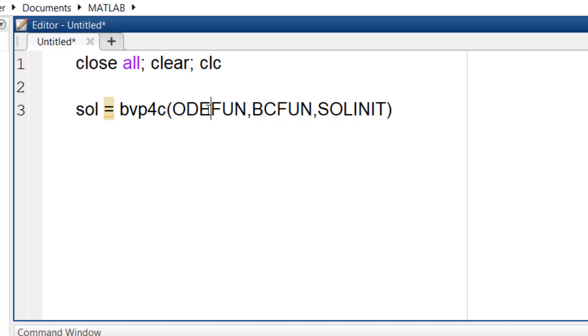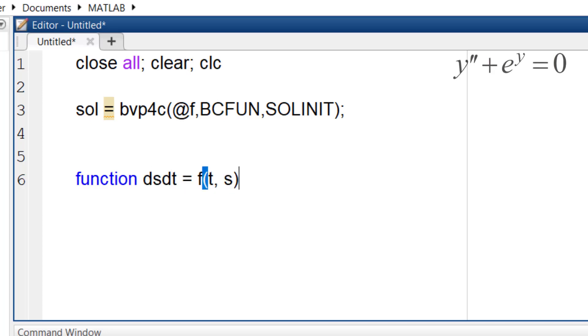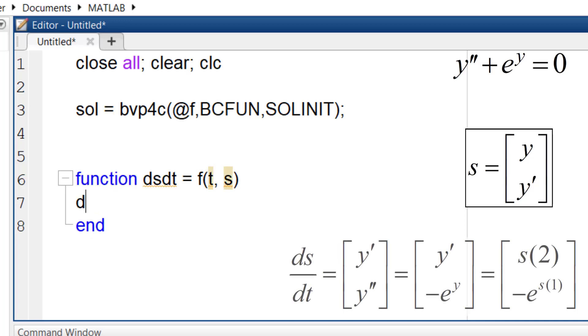The first argument is the system of equations which we define using a function f. The procedure is similar to ODE45 command. We have a second order equation so the state variables are going to be y and y prime. So ds dt will be y prime and y double prime. I define ds dt using my state variables. Of course y double prime is equal to negative exponential y.